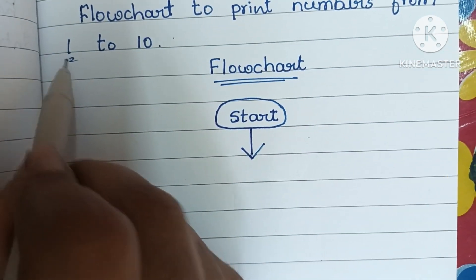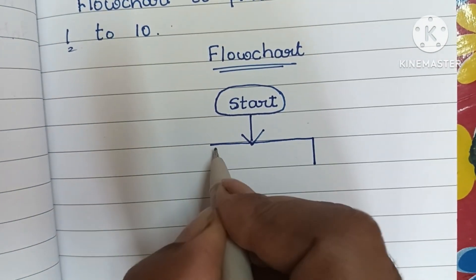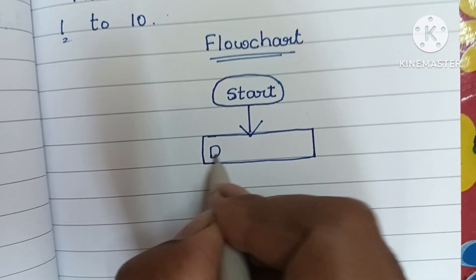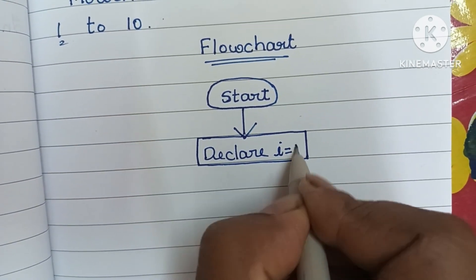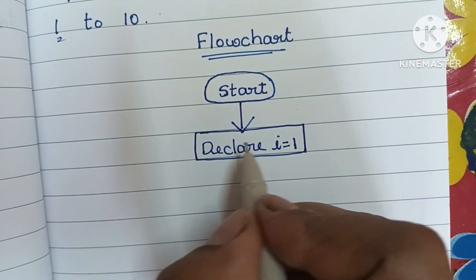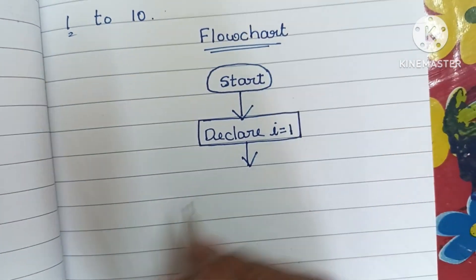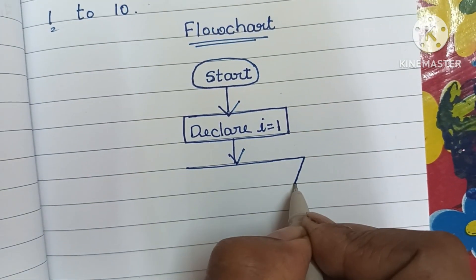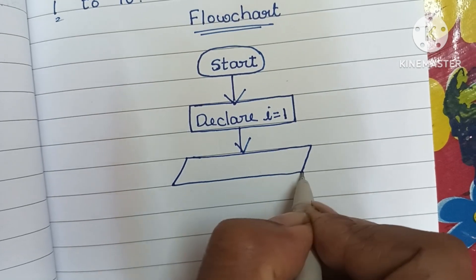The initial value is 1, so here we have to declare i is equal to 1. Declaration is done within a rectangular shape. Next, we have to print the value of i. Initially we have to print the value of i.